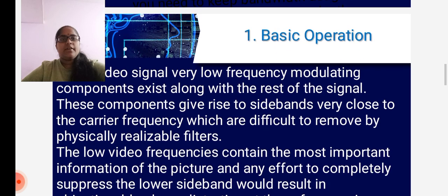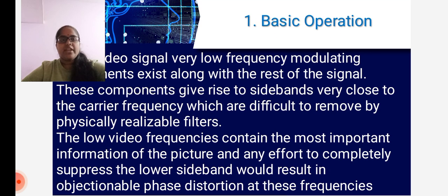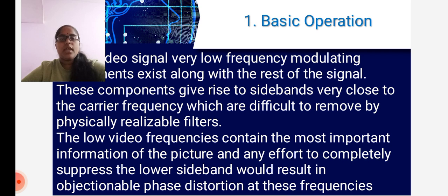Now let us learn the basic operation of vestigial sideband modulation in television broadcasting. In the video signal, very low frequency modulating components exist along with the rest of the signal. These components give rise to the sidebands very close to the carrier frequency, which are difficult to remove by physically realizable filters. The low video frequencies contain the most important information of the picture, and any effort to completely suppress the lower sideband would result in objectionable phase distortion at these frequencies.